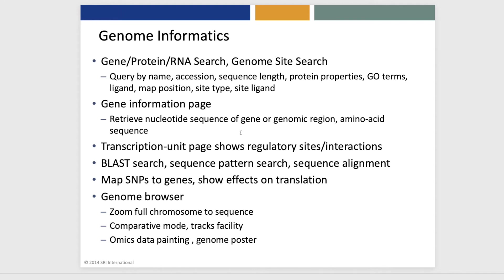There's a transcription unit page that shows regulatory sites and interactions. There are BLAST search, sequence pattern search, and sequence alignment tools. There's a tool that will map SNPs to the nearest genes and show effects on translation. There's also a genome browser that can zoom from the full chromosome in one screen to the sequence level, with a comparative mode, a tracks facility, omics data painting capability, and the ability to produce a genome poster.